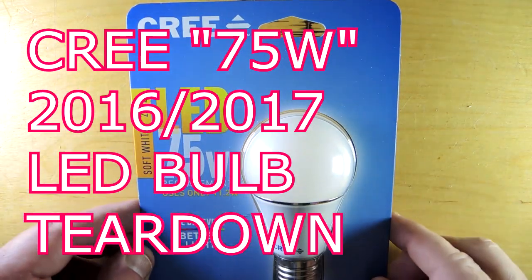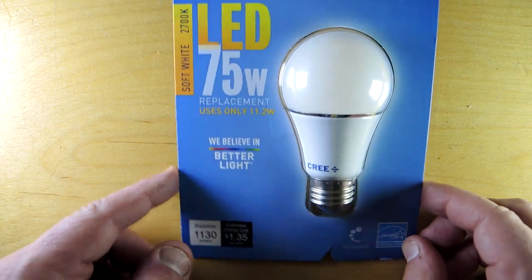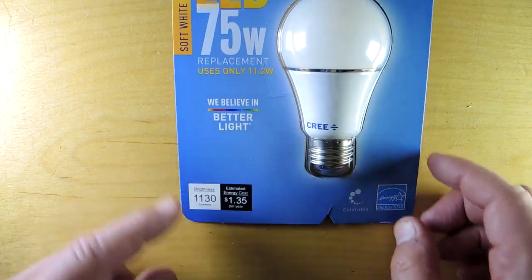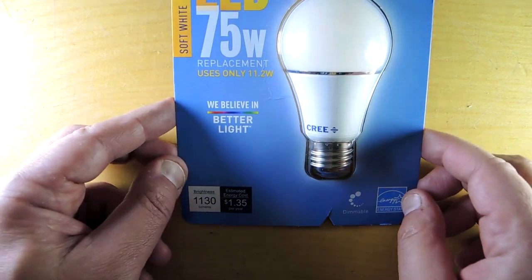Review time. This is a Cree LED light bulb, a 75 watt equivalency. They claim it draws 11.2 watts and generates 1130 lumens.